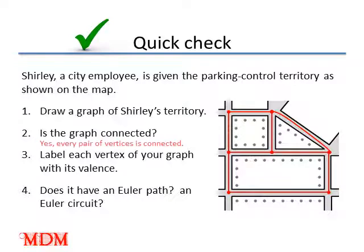Is the graph connected? Yes, every pair of vertices is connected. If we were to start in the upper left corner, it is possible to find a path that would take us to any of the vertices on the graph. The same is true for any vertex that we choose — we could find a path to go to another vertex. You can label these vertices with the valence of each vertex, and as we go around we can see what those values are.